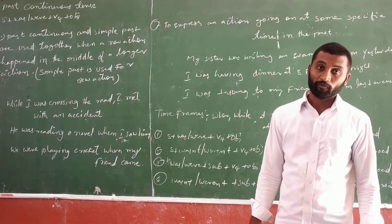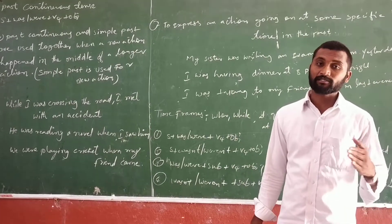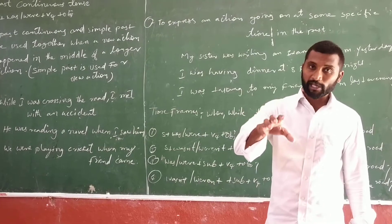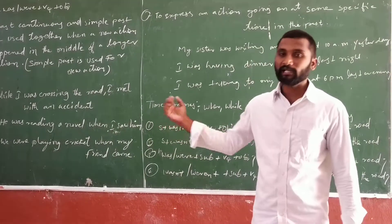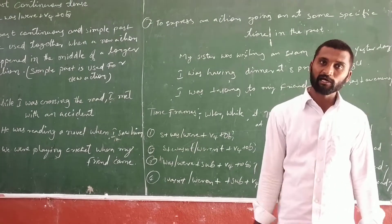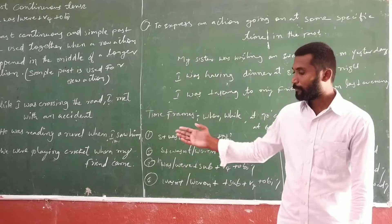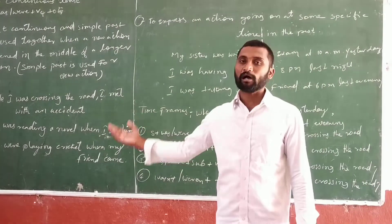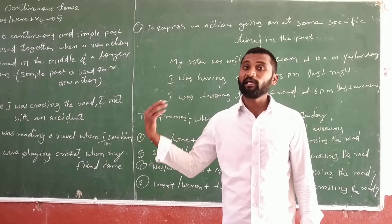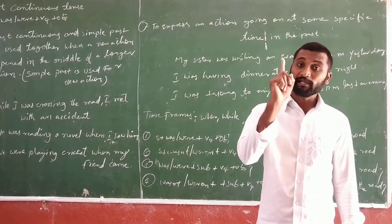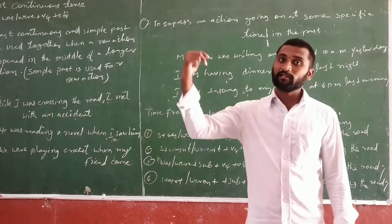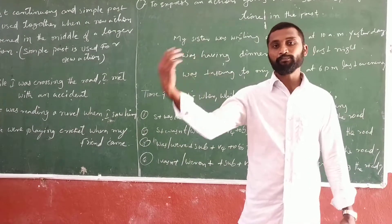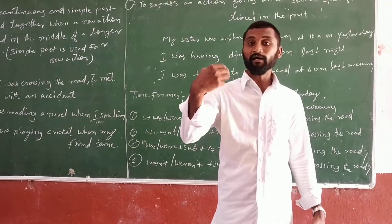'We were playing cricket when my friend came.' 'We were playing cricket' is past continuous — subject 'we', helping word 'were', main verb 'playing' (V4), object 'cricket'. 'When' is the conjunction word. 'My friend came' is simple past tense. So these examples use two structures: past continuous and simple past, combined with 'while' and 'when'.